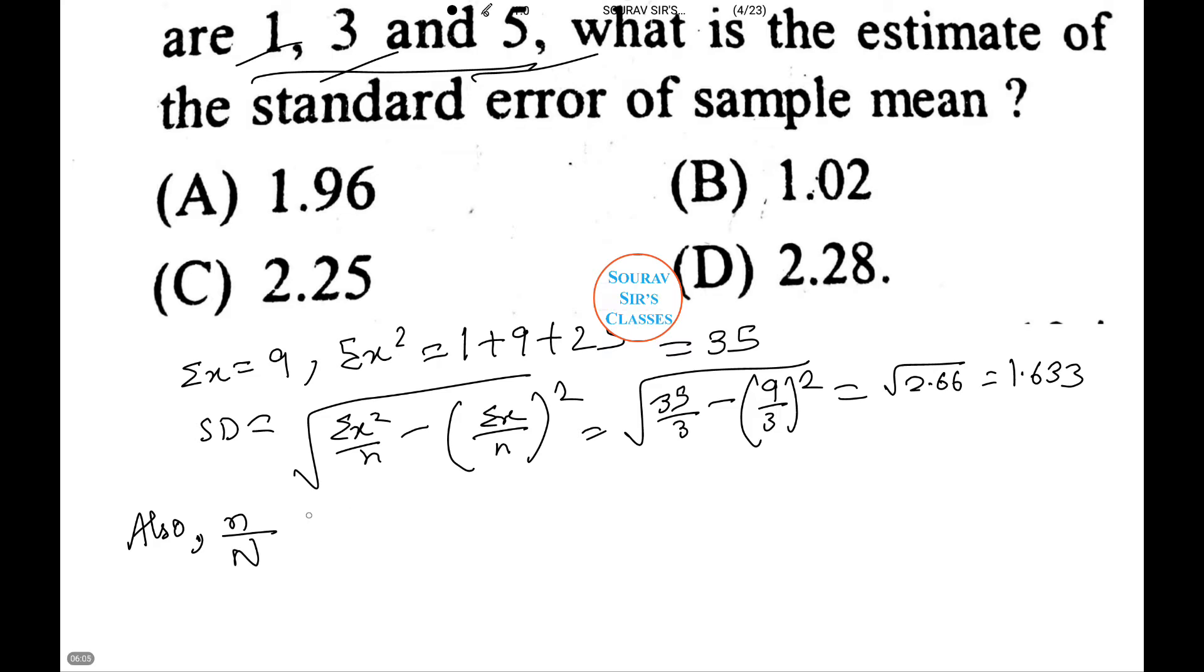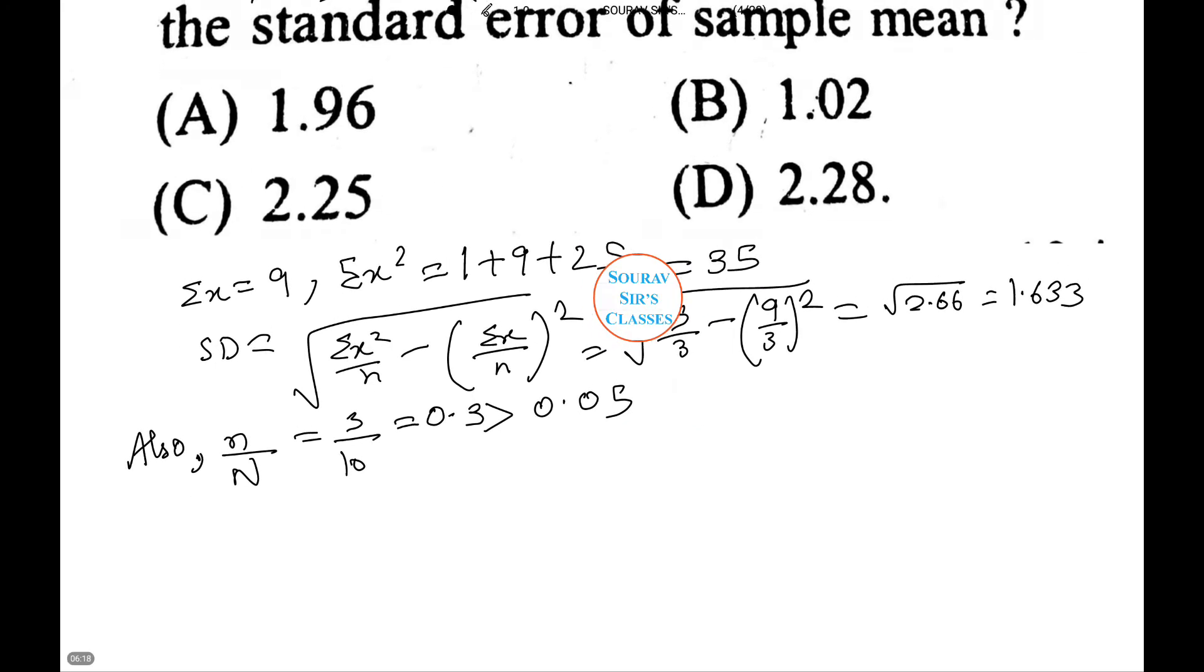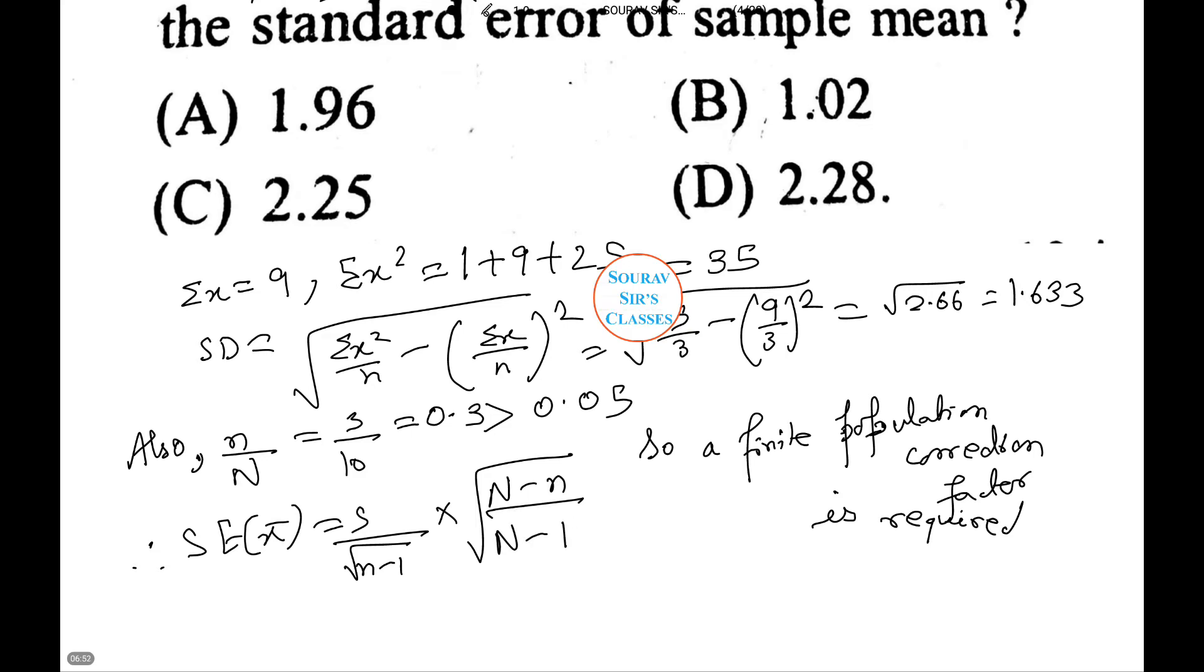Also, n/N = 3/10 = 0.3, which is greater than 0.05, so a finite population correction factor is required. That is, standard error x̄ = (s/√(n-1)) × √((N-n)/(N-1)), which equals 1.633/√2 × √(7/9).